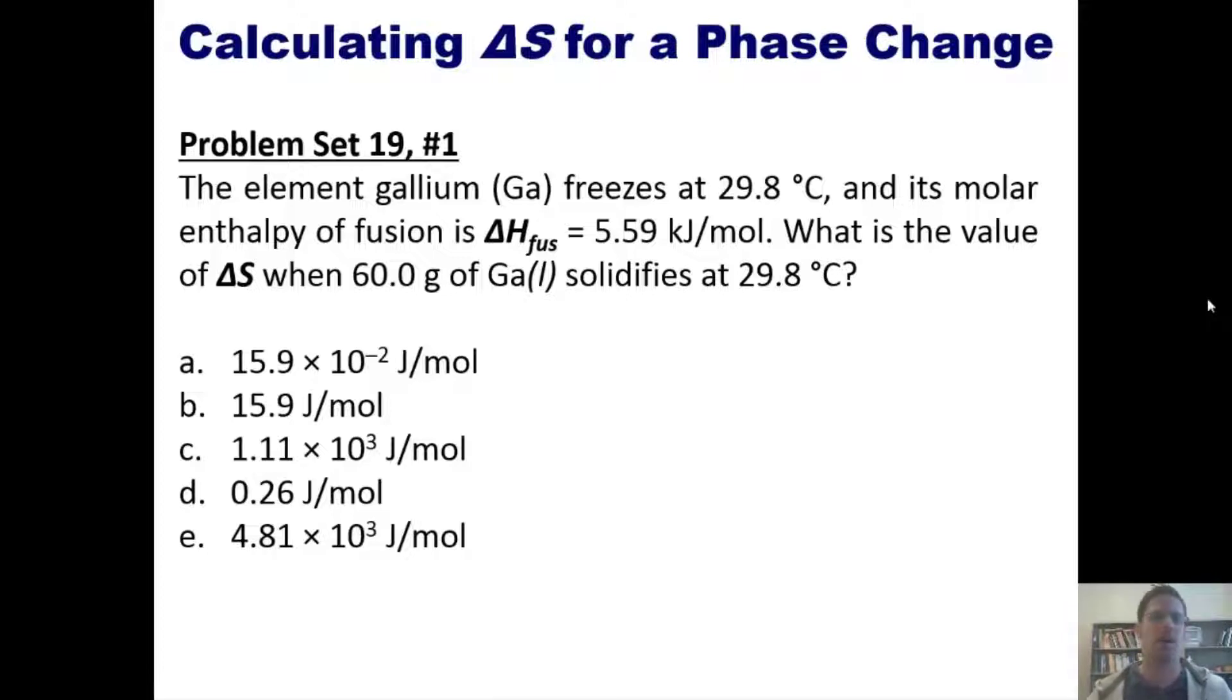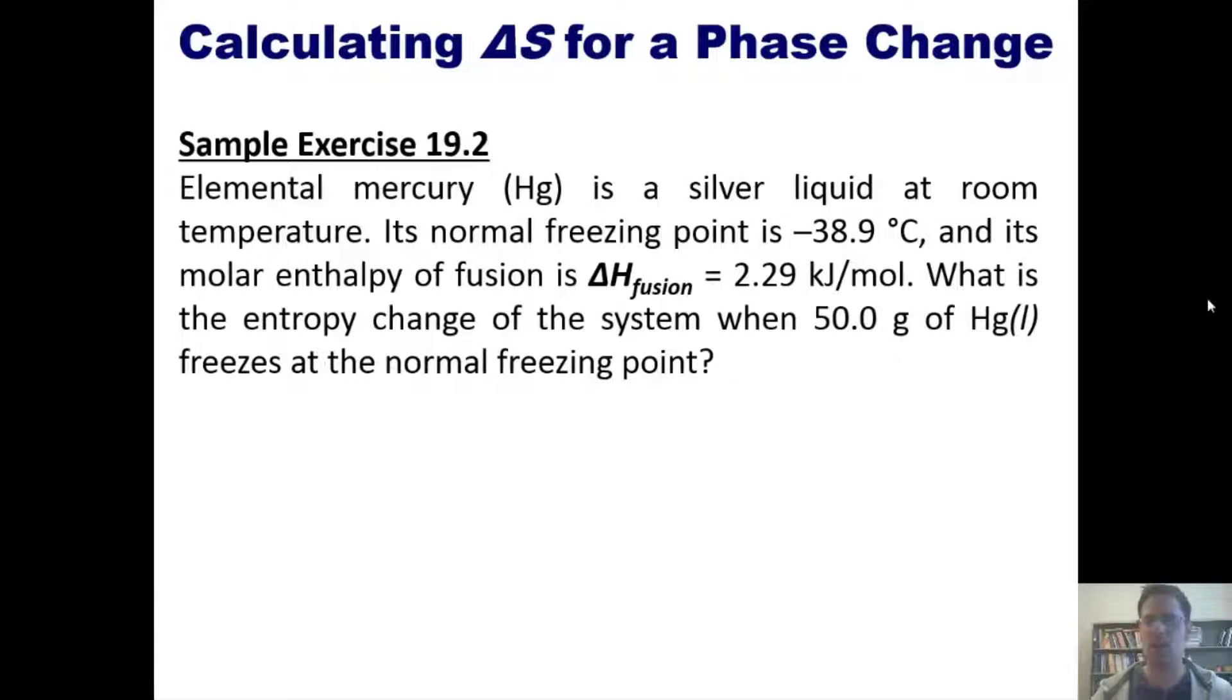Here's another one: elemental mercury (Hg) is a silver liquid at room temperature. Its normal freezing point is −38.9°C and its molar enthalpy of fusion is ΔH_fusion = 2.29 kJ/mol. What is the entropy change of the system when 50.0 g of Hg(l) freezes at the normal freezing point? You can use the information from the previous example to attempt this on your own and then if you like you can click the link here to a separate video which I'll show you how to do it on the board.